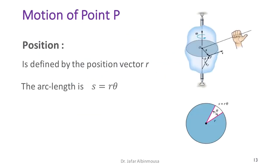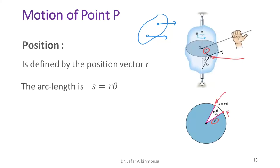Recall that for translation, any two points on the rigid body have the same velocity and acceleration. With rotation, the story is totally different. If we consider the position of point P on the rigid body represented by position vector r, then when we introduce a displacement, point P moves along an arc. We can measure the length of that arc path and use it to calculate displacement, velocity, and acceleration.